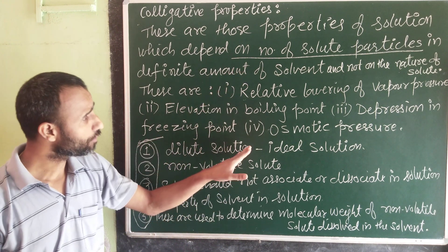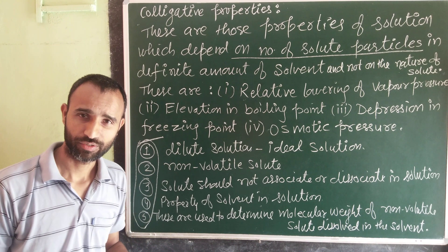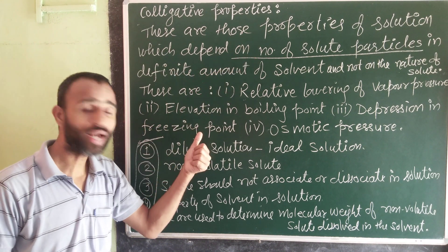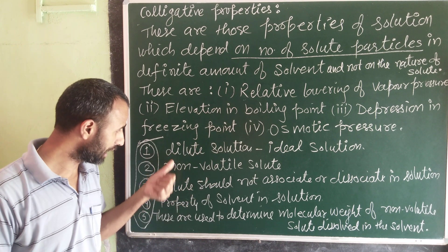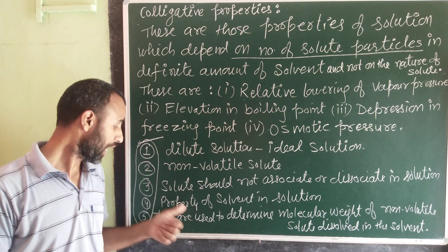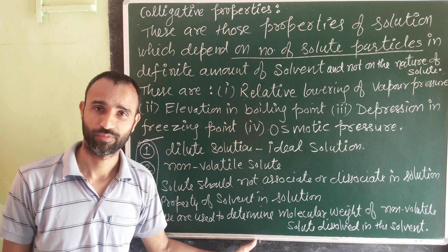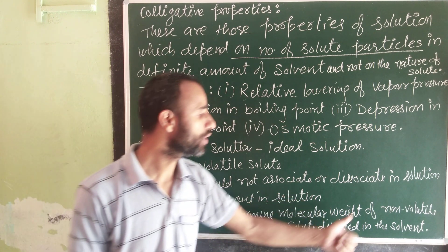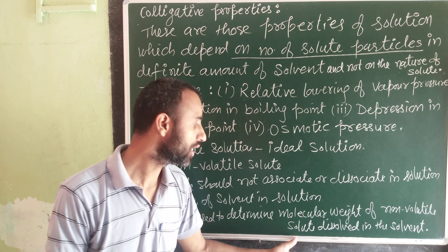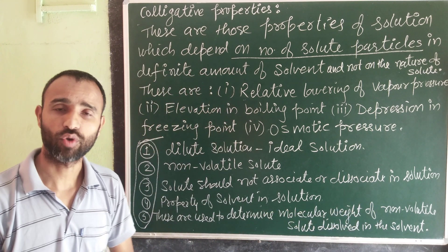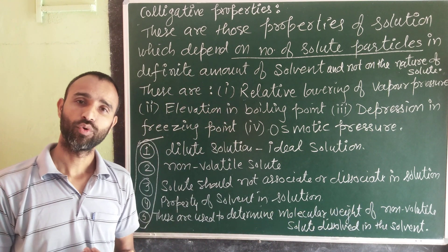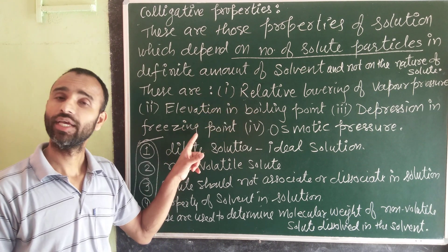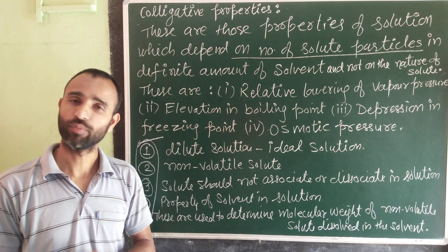So, to summarize: what is a colligative property, what are those four properties, what are the conditions when they are applicable, and what is the application — which is to determine the molecular weight of a non-volatile solute dissolved in the solvent. In the next lecture, we will study each property along with its numericals.